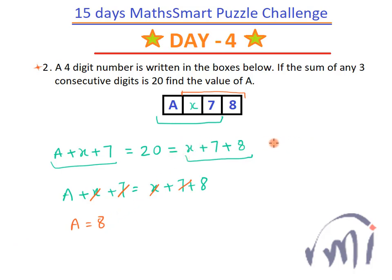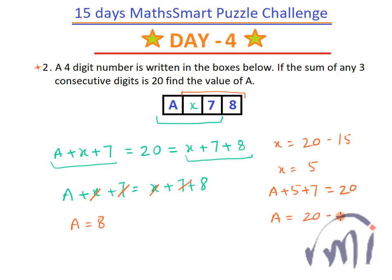And from here, if I find the value of X: X will be 20 minus 7 plus 8, which is 15 — so X equals 5. And if I substitute the value of X, A plus 5 plus 7 equals 20, or A equals 20 minus 12, which is 8. So this is one method — longer, but valid. By comparison, equating A plus X plus 7 to X plus 7 plus 8, you can directly say A equals 8. That's the shortcut, and these are the two ways to solve question number 2.